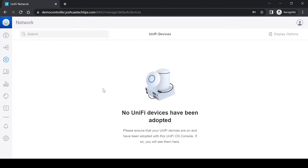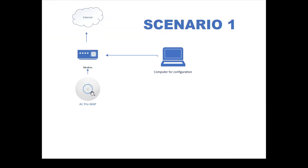I'm going to show you how to adopt devices to this controller so you'll be able to manage them. There are actually two scenarios — two methods of adopting devices. For the first scenario I have an AC Pro access point which connects directly to my ISP-provided modem, which then takes us to the internet. I'm using a POE injector to provide power to this access point. This method is perfect for adopting one or a couple of devices, while the other method would be more appropriate for mass deployments.